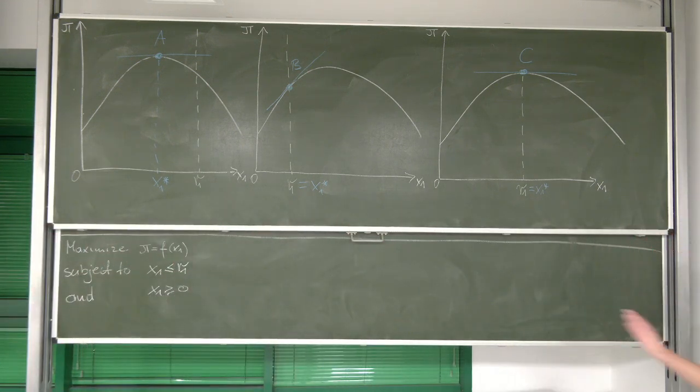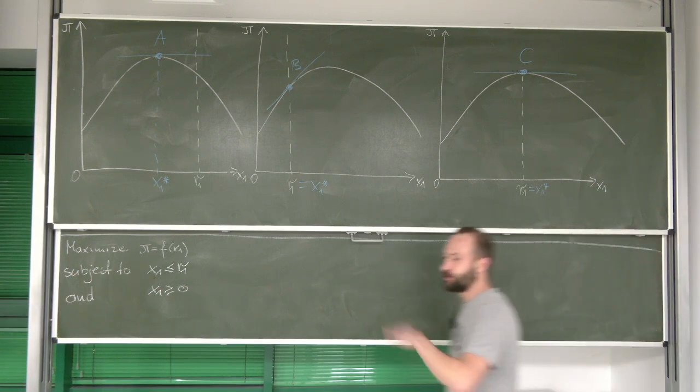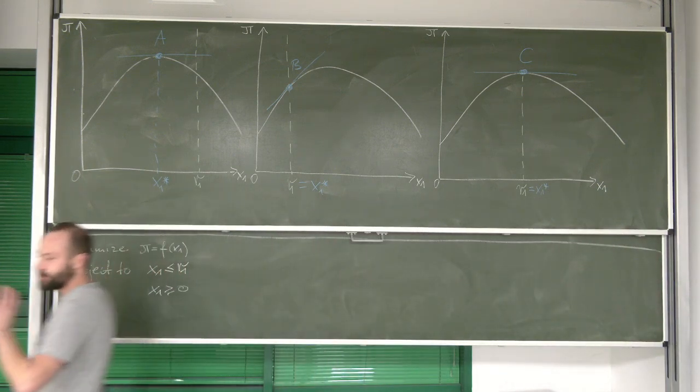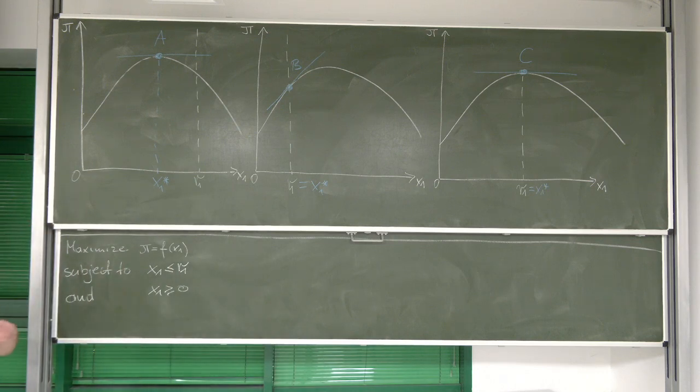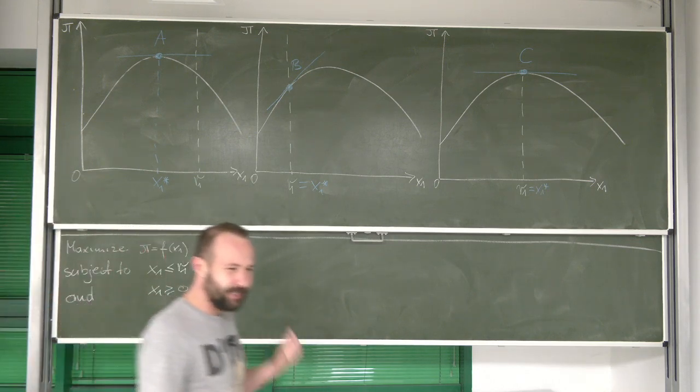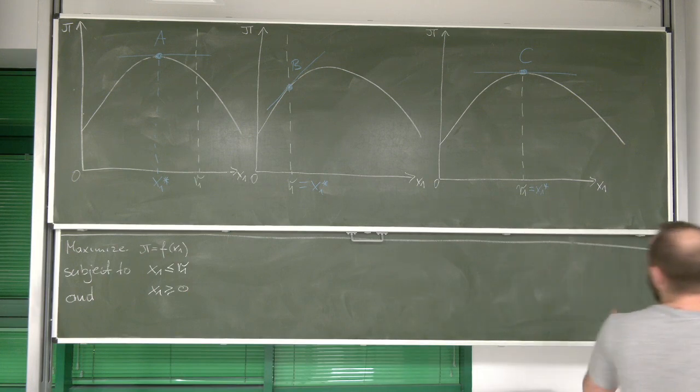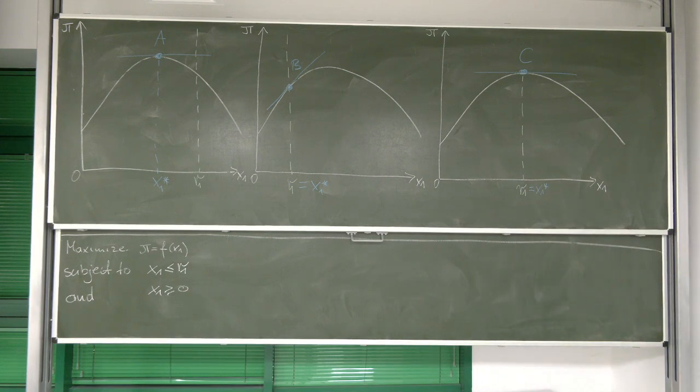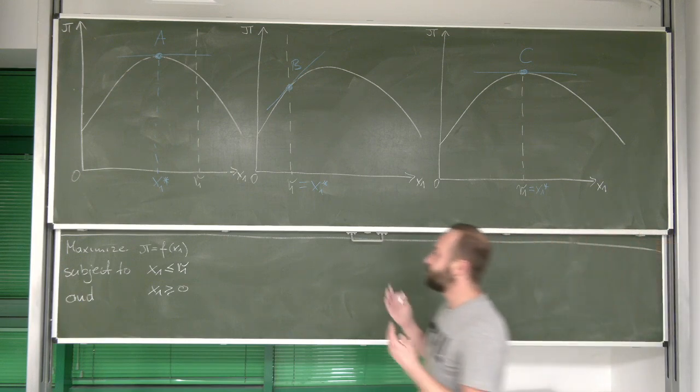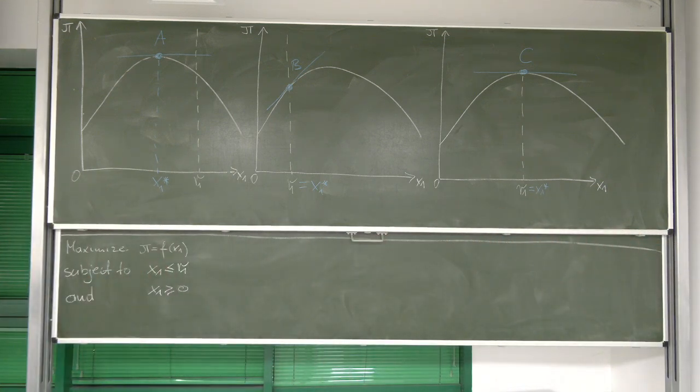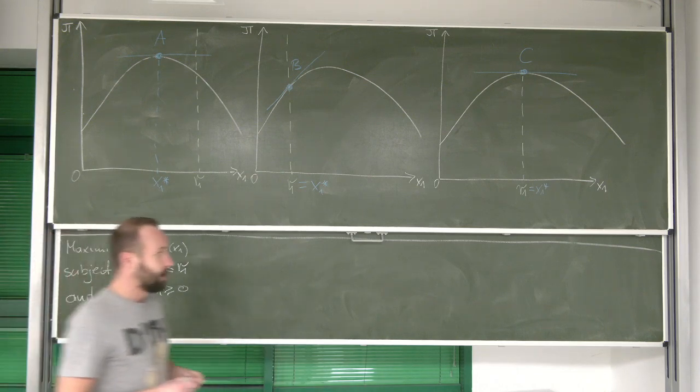However, before we get to the most general case of n variables and n constraints, let's get a little bit more intuition behind Kuhn-Tucker conditions and the relation to the maximization under inequality constraints.